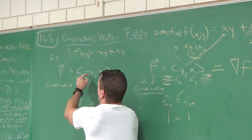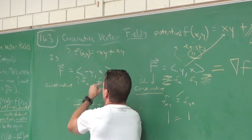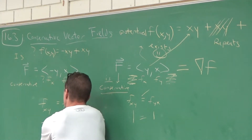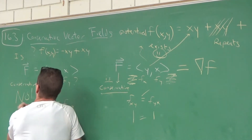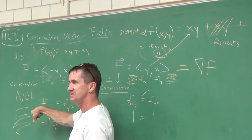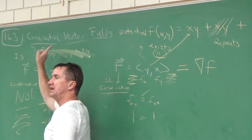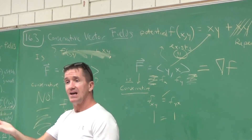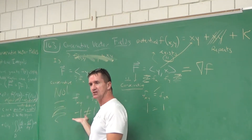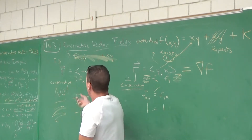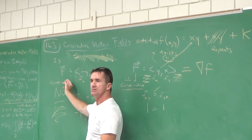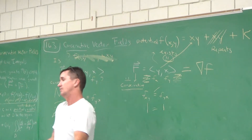This vector field is not conservative. So rather than wasting time trying to find a potential function, check first. If the derivatives aren't equal, don't try to find a potential function. If the check passes, then go find a potential function. To evaluate a line integral when the vector field is not conservative, you have to do it directly using the section 16.2 technique — computing F dot dr with all the parametric math.